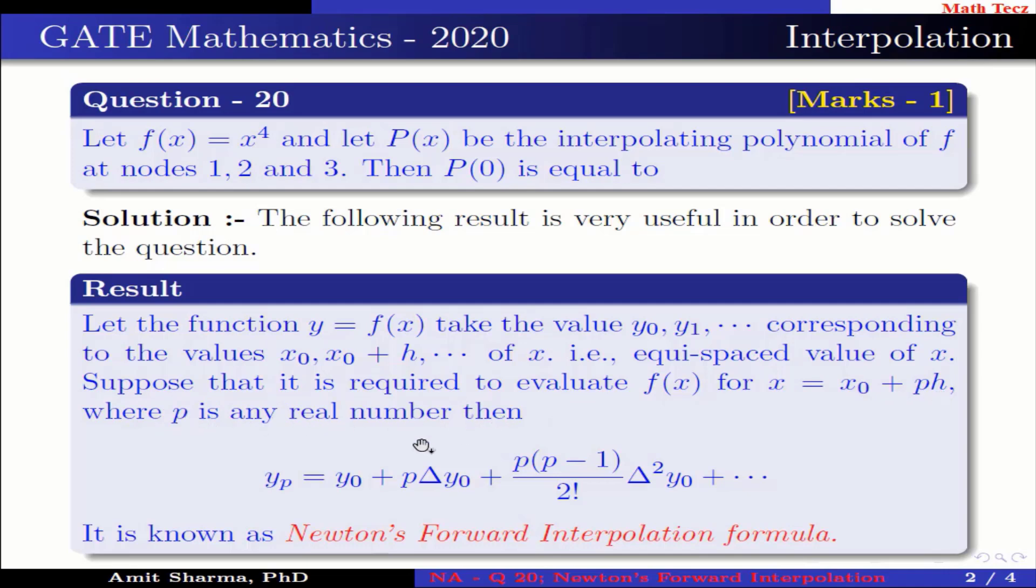Then yₚ = y0 + p·Δy0 + [p(p-1)/2!]·Δ²y0 + and so on. It is known as Newton's forward interpolation formula.